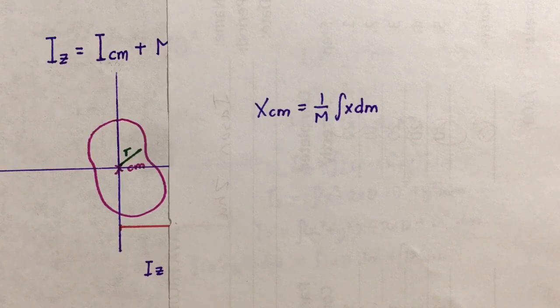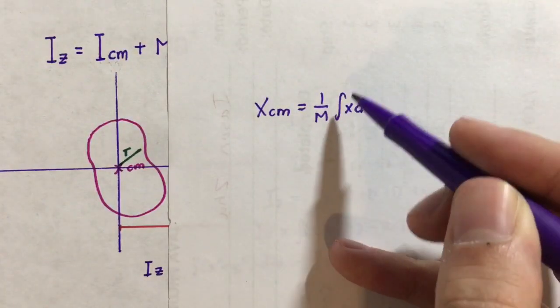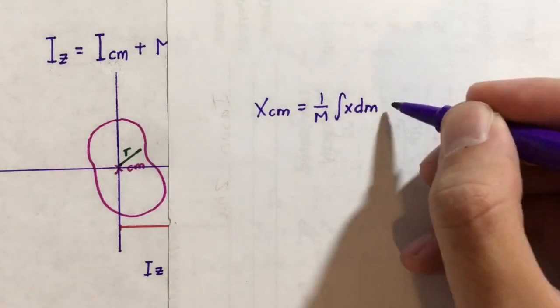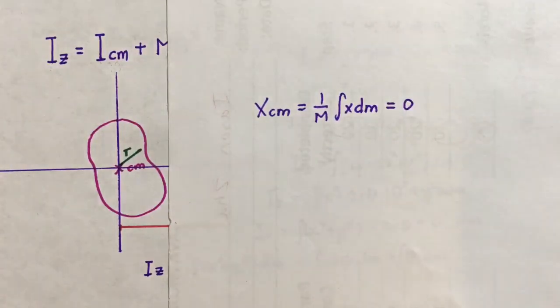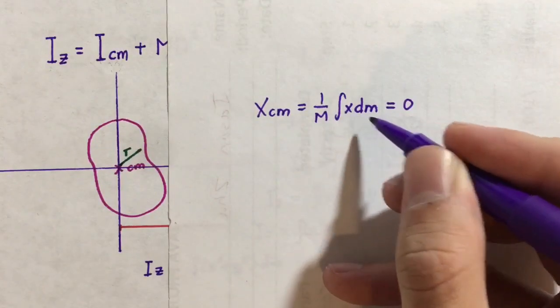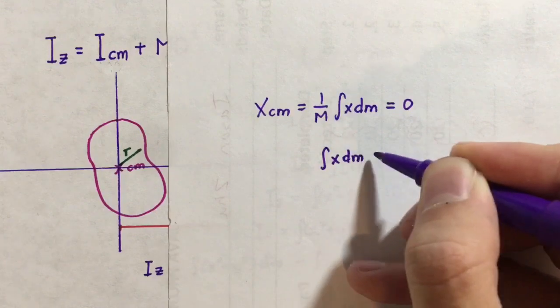By definition, the center of mass, at least along the x-axis, is equal to 1 over the mass times the integral of xdm. And because we are centered about the origin, this has to equal zero. Since 1 over m is never equal to zero, the integral of xdm must equal to zero.